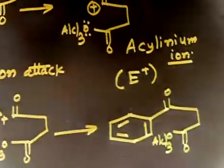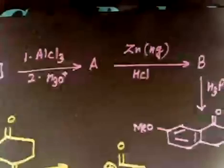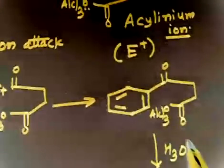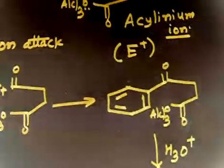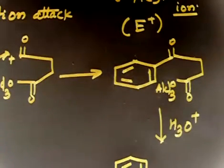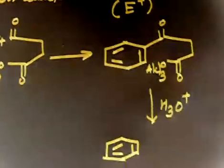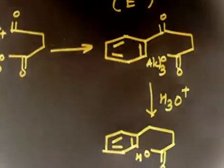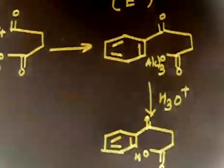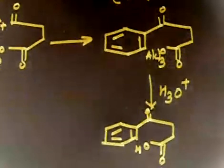Now you see — in the next step this is your product after reaction with AlCl3. Now you are doing hydrolysis with H3O+. So if you treat this compound with H3O+, the AlCl3 complex will finally convert into OH. So your final product will contain OH, double bond O, and OH. This is your product A.